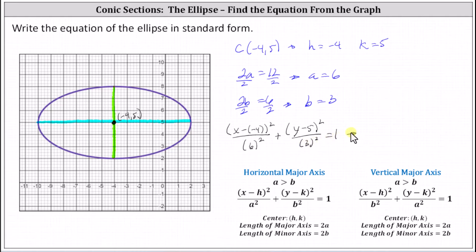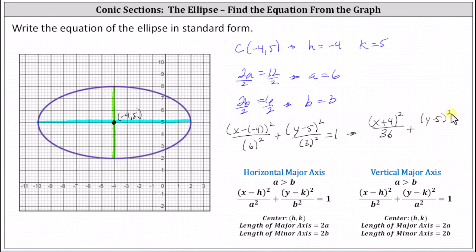Simplifying, we have the square of x plus four divided by 36, plus the square of y minus five divided by nine, equals one. I hope you found this helpful.